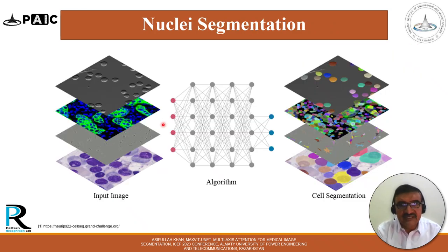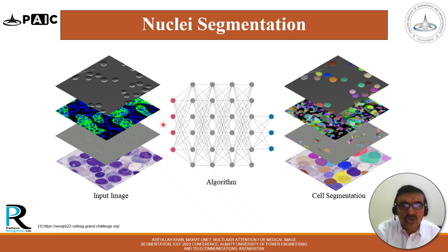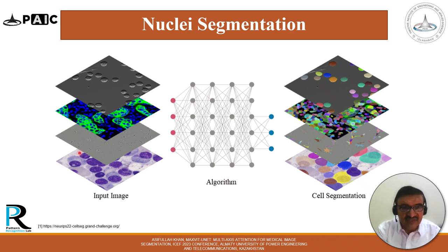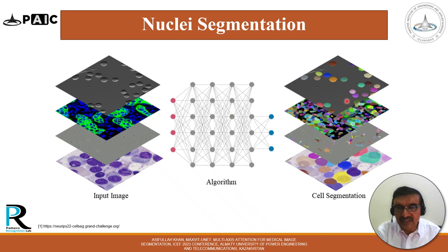As an example of nuclei segmentation, the aim is to segment the nuclei of the tissue. Different input images are given to the deep neural network algorithm, which tries to segment the objects in each image. The body, structure, or morphology of the cell is also provided as part of the output.